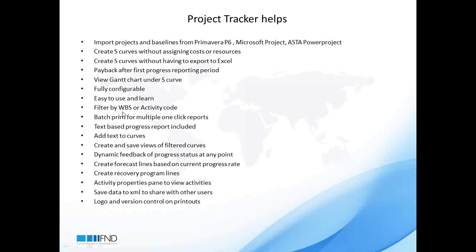Project Tracker is not only giving the project S-curve — this is very important. You can get S-curves for all work breakdown structure levels and all activity codes, so you can analyze at WBS level, the lowest WBS level, each contractor, each location, and each process such as procurement and design. You can get printouts with a single click using configurable templates where you can add your company logo and customer logo. It also provides progress support in text format, allows you to add text on curves, filter curves, provides dynamic feedback from progress, forecast and recovery lines, and can be saved in XML format and shared with other users.